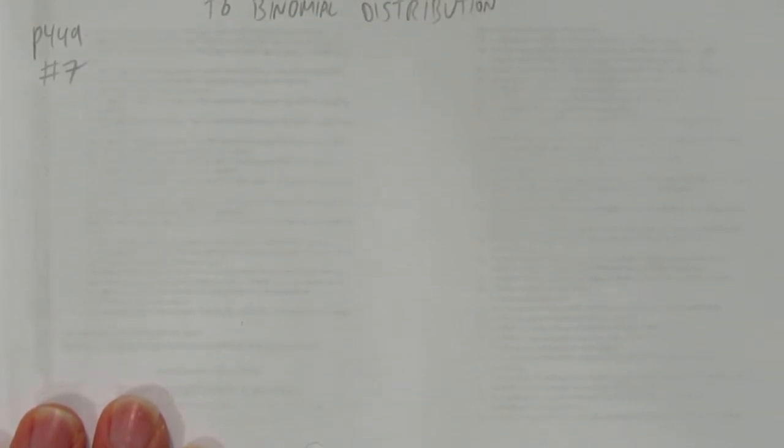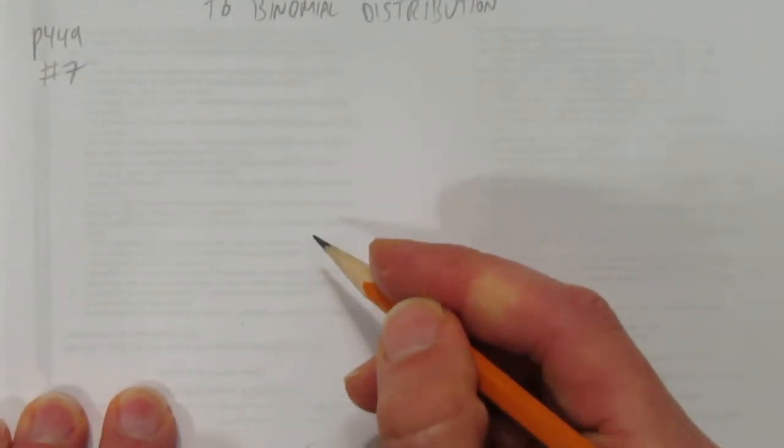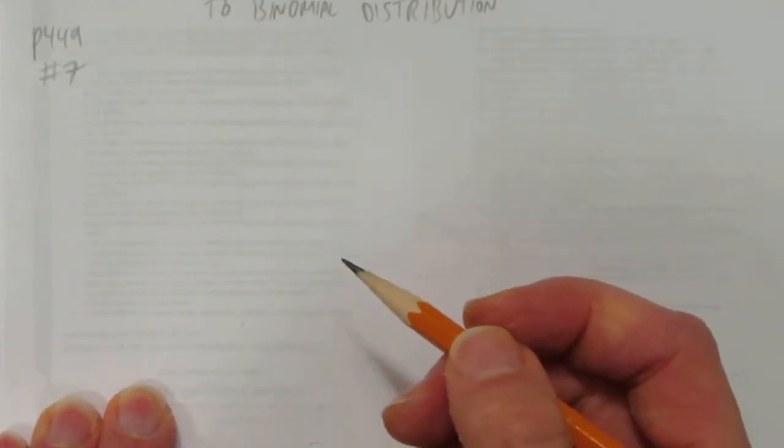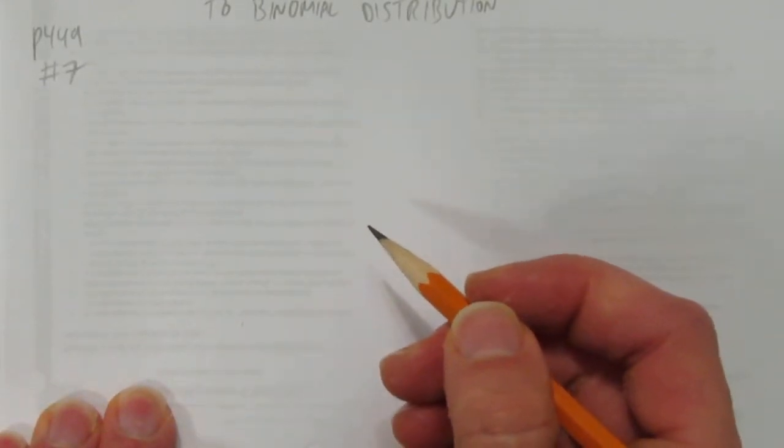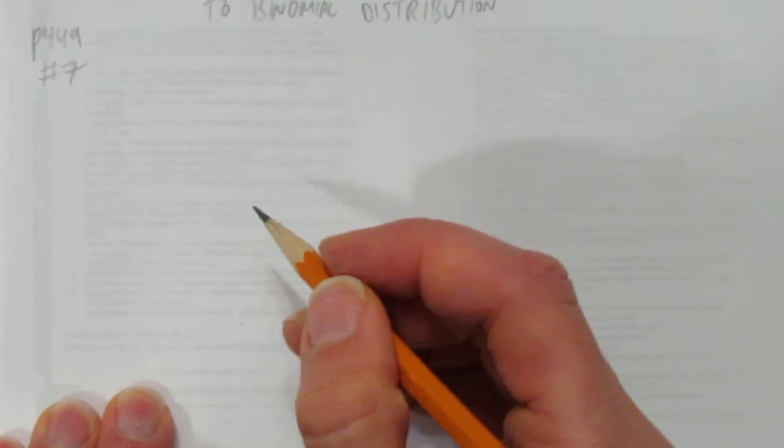So the question says, a human resources manager at a company knows that 34% of the workforce belongs to a union. If she randomly selects 50 employees, what is the probability that exactly 30 of them do not belong to the union? Compare the results of using the binomial distribution with the results of using the normal approximation.